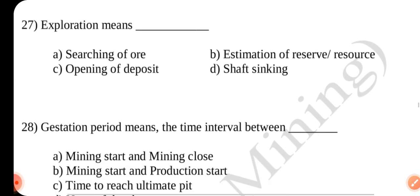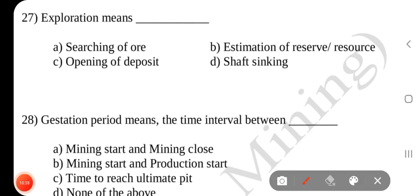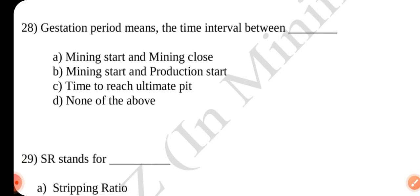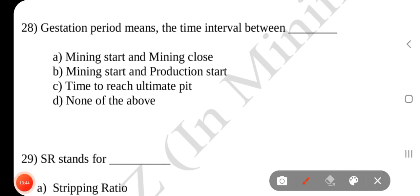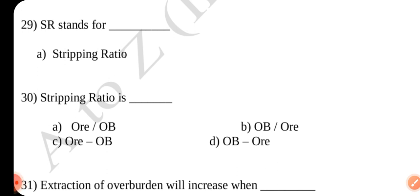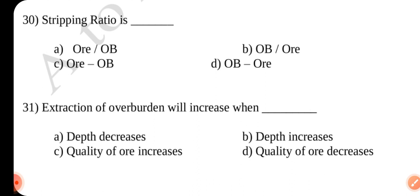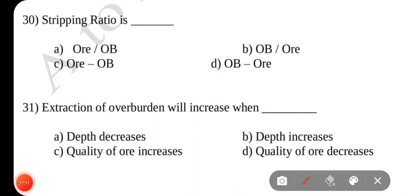Question number 27: Exploration means estimation of reserves or resources. Answer is B. Question number 28: Gestation period means the time interval between mining start and production start. Answer is B. Question number 29: SR stands for Stripping Ratio. Question number 30: Stripping ratio is overburden divided by ore (OB/Ore). Answer is B.